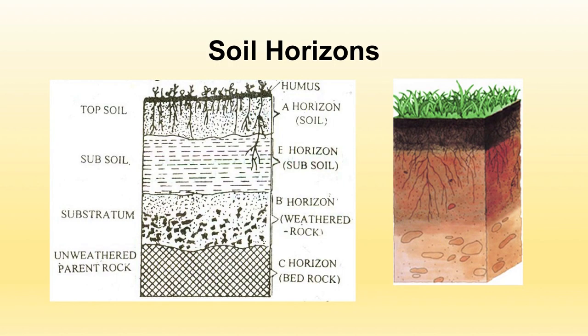Now we will deal with soil horizons. A soil horizon is a layer of soil that lies almost parallel to the surface and has fairly distinctive soil properties. Different layers can be seen in a cross-section, including topmost soil, subsoil, substratum, and unweathered parent material — known respectively as A horizon, E horizon, B horizon, and C horizon.